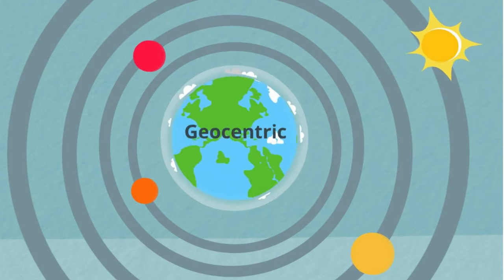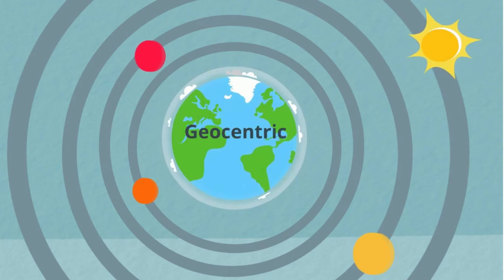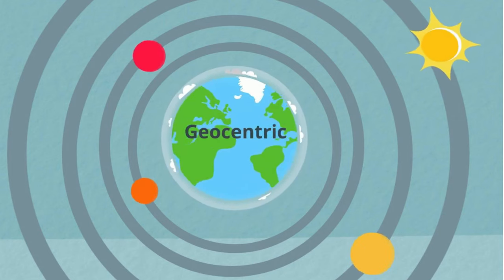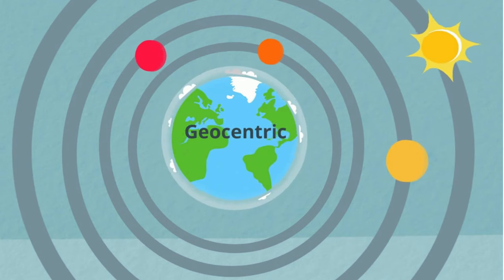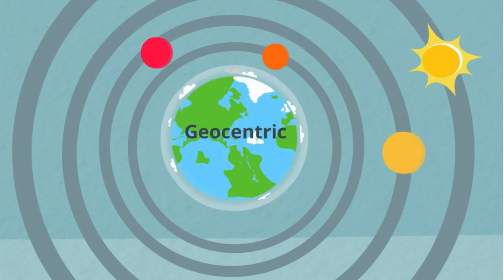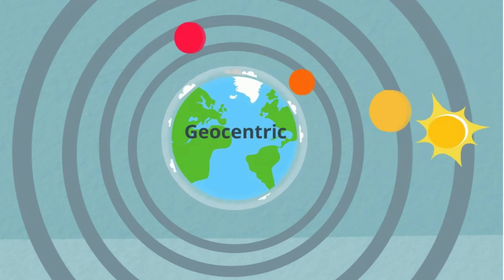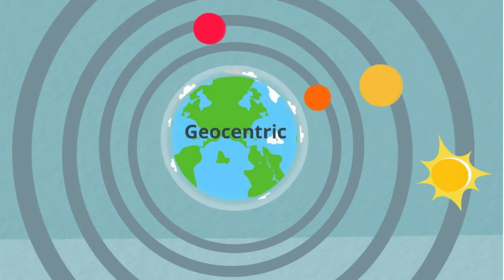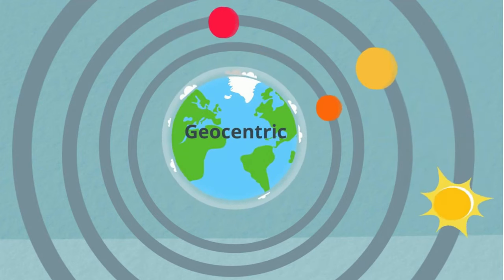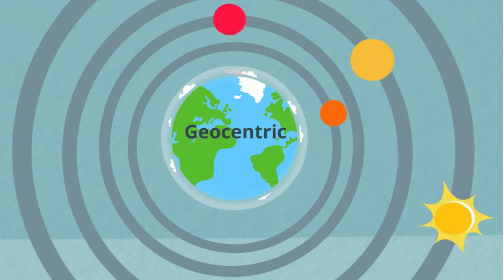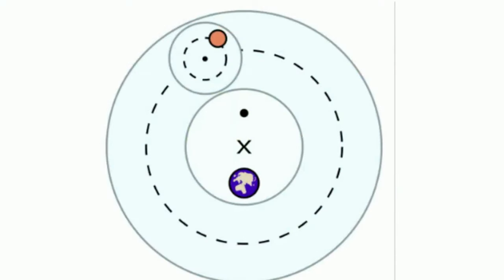However, there were some problems. For example, sometimes the planets appeared to be going backwards, or to have a retrograde motion. In order to explain this, small orbits called epicycles — which are orbits inside the orbit — were proposed to help explain this backwards motion.